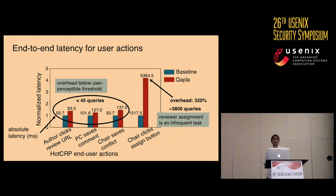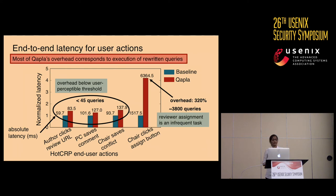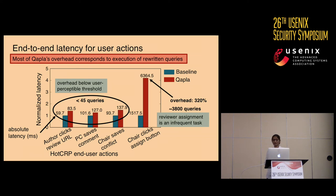We measured the impact of Kapla's policy enforcement on end-user latency across four user actions with different roles. The first simulates an author viewing reviews after decision notification; the second simulates a PC member saving review comments; the third simulates a chair assigning a conflict; and the fourth simulates the chair running an automatic review assignment task. The blue bars show latencies without enforcement and red bars with enforcement, normalized to baseline. For the first three actions, the baseline latency is about 100 milliseconds and Kapla adds about 30 to 40 milliseconds — well below the user-perceptible threshold. For the fourth action, the baseline is about 1.5 seconds and with Kapla it becomes about 6.5 seconds, because the review assignment issues about 3,800 queries — but this is an infrequent task run only a few times during the conference. Kapla's overheads are mostly due to the execution of rewritten queries by MySQL, and a more sophisticated query optimizer can significantly reduce these overheads.